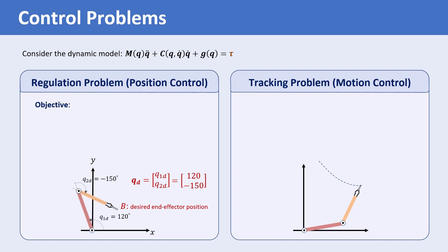Then the objective is to find the vector tau such that the joint coordinates Q converges to the desired joint coordinates Q sub D as time goes to infinity.